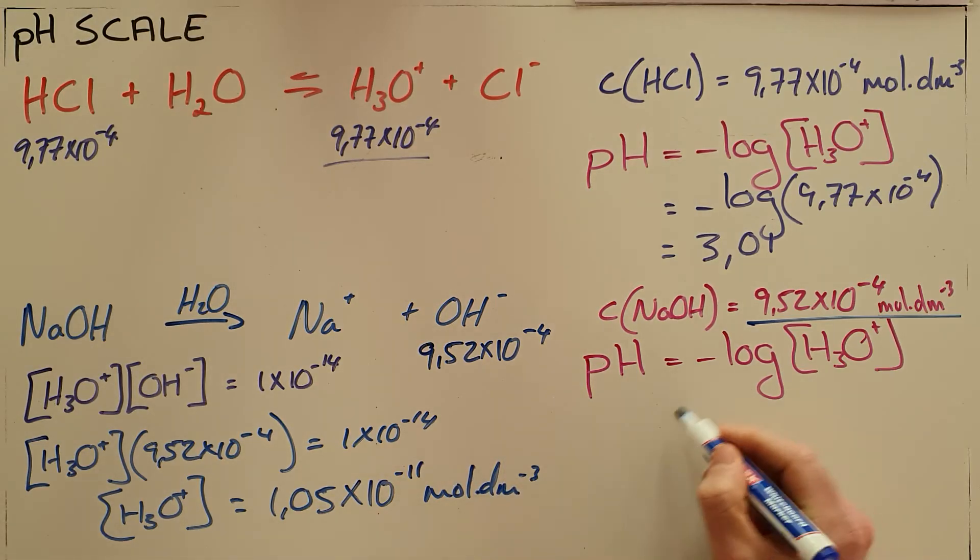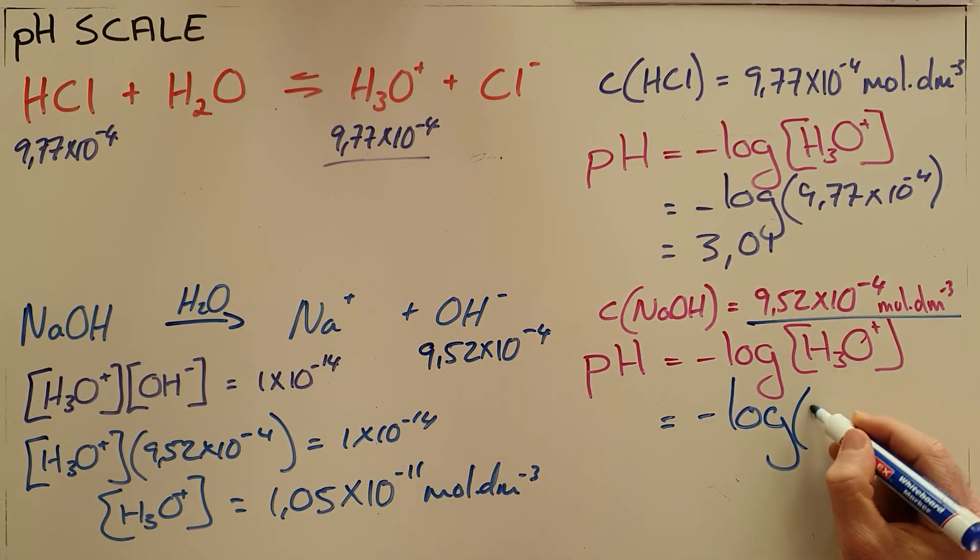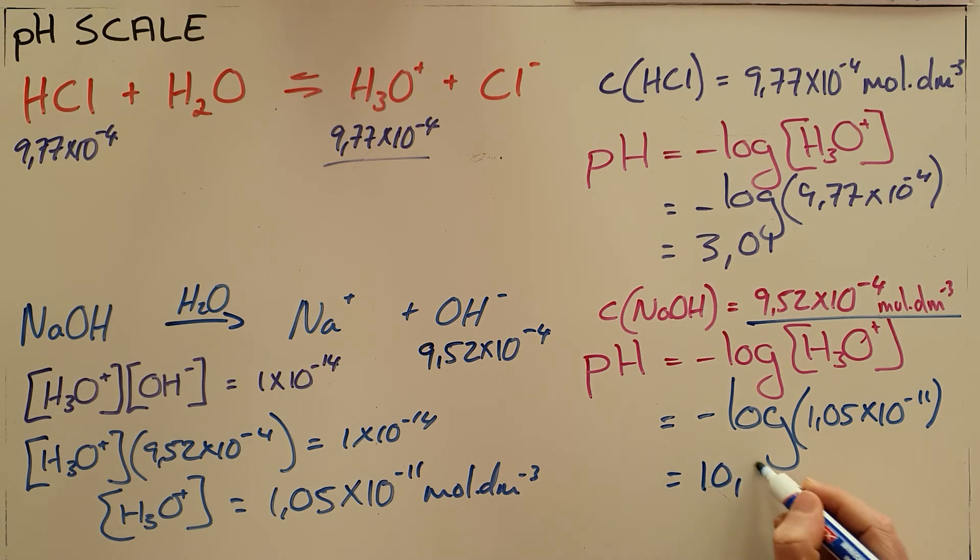Which we then know we can substitute into our pH calculation, the negative log of that hydronium concentration, to find that this solution of sodium hydroxide has a pH of 10.98, which makes sense once again that this is a fairly strong base.